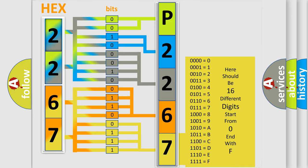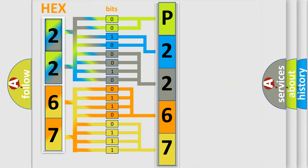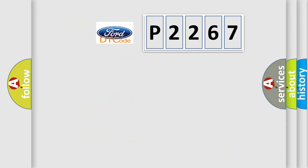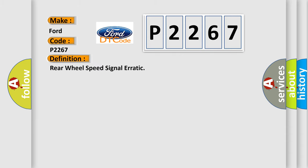We now know in what way the diagnostic tool translates the received information into a more comprehensible format. The number itself does not make sense to us if we cannot assign information about what it actually expresses. So, what does the diagnostic trouble code P2267 interpret specifically?